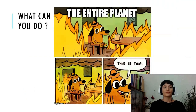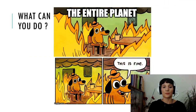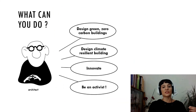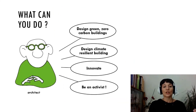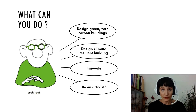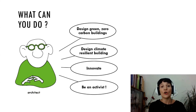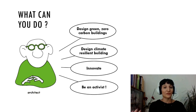So what can you do? If you are an aspiring architect, you cannot just ignore this problem. You need to be a green architect. You need to design zero carbon buildings. You need to design buildings which are going to be resilient to climate change — designed to respond in a way which is sustainable and good for the environment. You will need to think about how you can innovate, and you also need to be an activist, taking position through your work and your designs to prevent climate change.